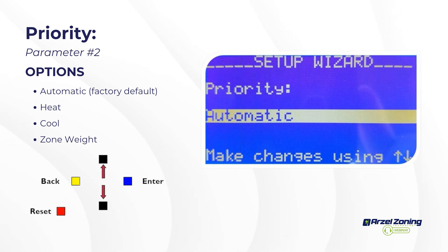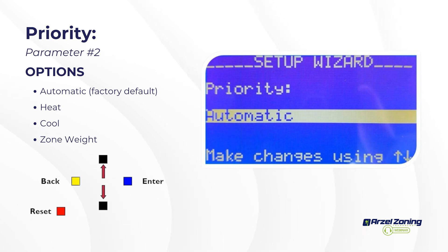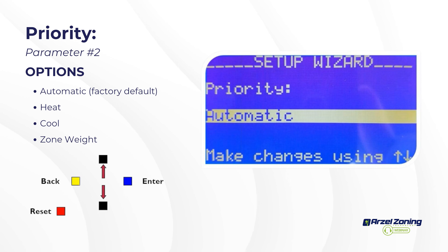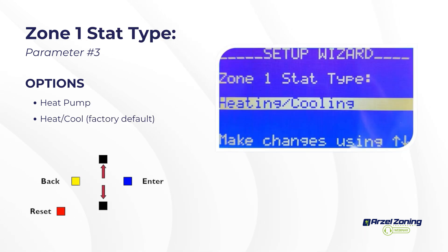Zone weight priority allows you to set a hard lockout on the changeover. With automatic, heating, or cooling priority, after 20 minutes of serving the priority zone the panel will switch to the opposing call. With zone weight priority it's a majority-rules system — if the majority of calls are for heating, heating is served indefinitely before a cooling call can be served.